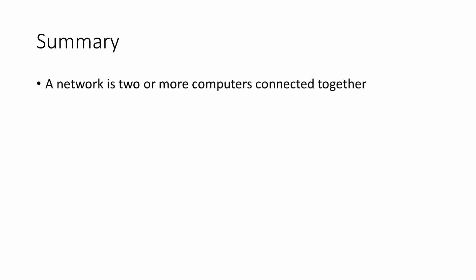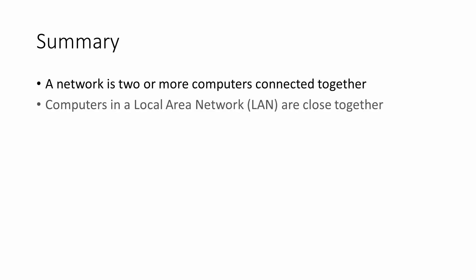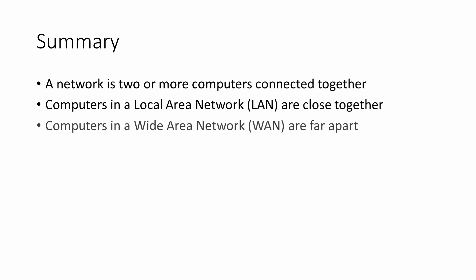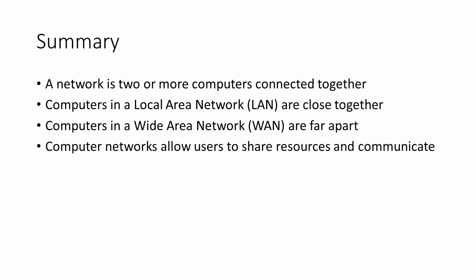To summarise, a network is two or more computers connected together. Computers in a local area network are close together, whereas computers in a wide area network are far apart. Computer networks allow users to share resources and to communicate with each other.